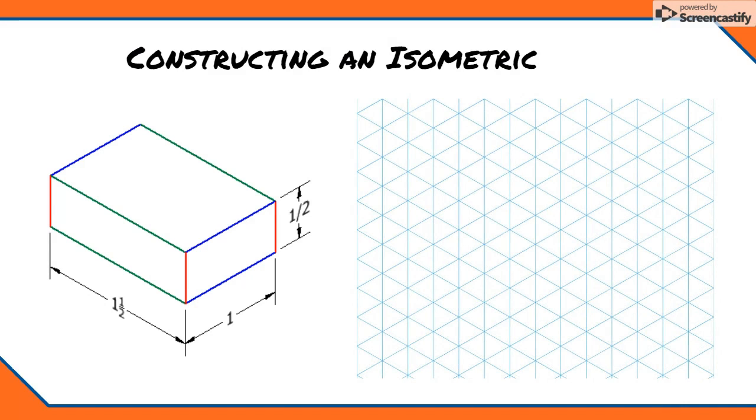If we assign a scale to our isometric grid, we can easily draw dimensioned objects with exact proportions in isometric. For this exercise, I'll use a scale of one grid space equal to one quarter of an inch. The bottom corner of the object closest to you is usually a good place to start. I'll place this point on my isometric grid in a spot where all three lines intersect.